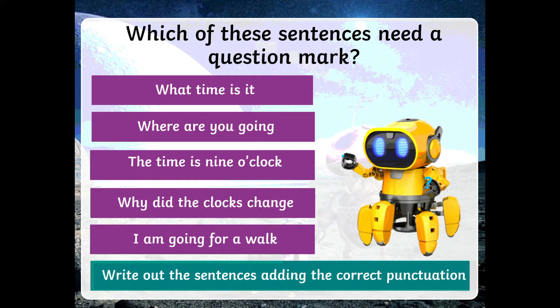What I want you to do, or in fact what the robots want you to do, is write out these sentences adding the correct punctuation. So that's going to be either a full stop, and you can see he's holding one there, or a question mark. And when you're ready, grown-ups, when you've written the sentences or if you want to do one at a time, I'm going to have a look at what needs to go with which. So pause the video now and start it again.